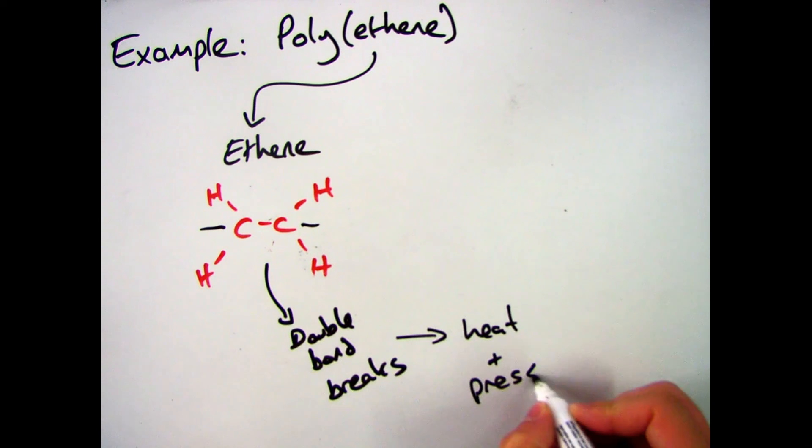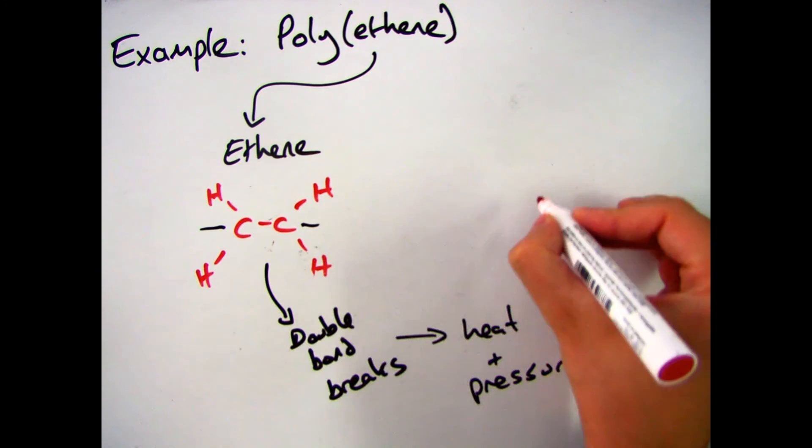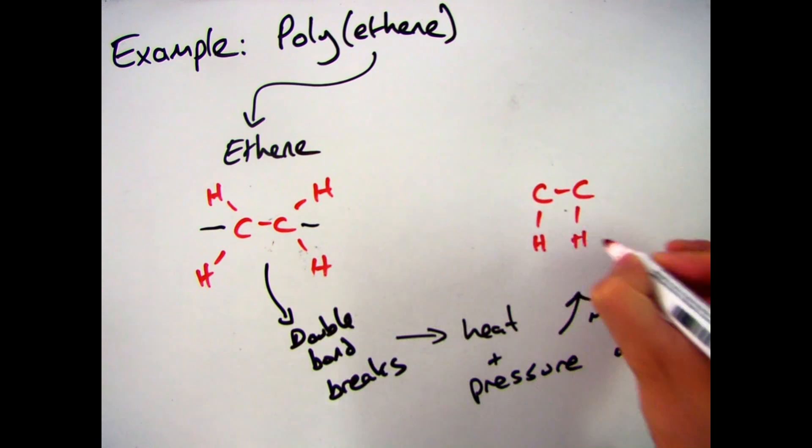The heat is used to break the double bond and then the pressure is used when you add many of these ethene molecules together. The pressure forces them together to bond.